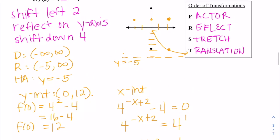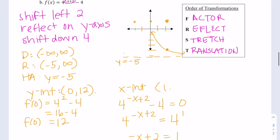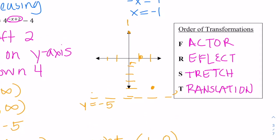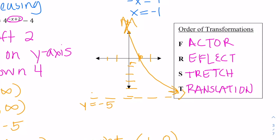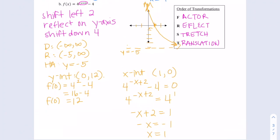The y-intercept was (0, 12) and the x-intercept was (1, 0). I'll fix the sketch a little bit so it's steeper — it goes up very high. And again, that's just a sketch, so I'm going to approximate that value too. Just make sure you're careful when you have multiple transformations.